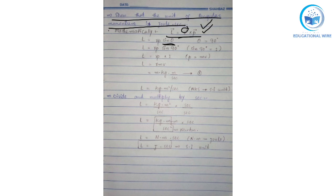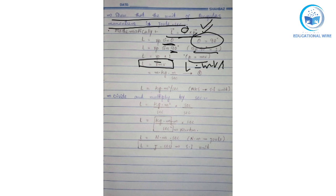We replace with sinθ, and since θ = 90° at maximum level, sin 90° = 1, giving no effect on multiplication. Replacing p with mv (linear momentum), we get L = rmv, or equivalently L = mvr. With position vector in meters, mass in kilograms, and velocity in meters per second, this is our equation number one.